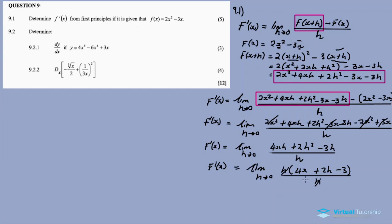And then I get f prime of x. This is equal to limit h approaches 0, and it's 4x plus 2h minus 3. Then the h will cancel with another h. Now after canceling out, h can substitute as 0. Then my f prime of x is equal to 4x plus 2 times 0 minus 3. Our answer is what? It's 4x minus 3. This is our final answer for 9.1.